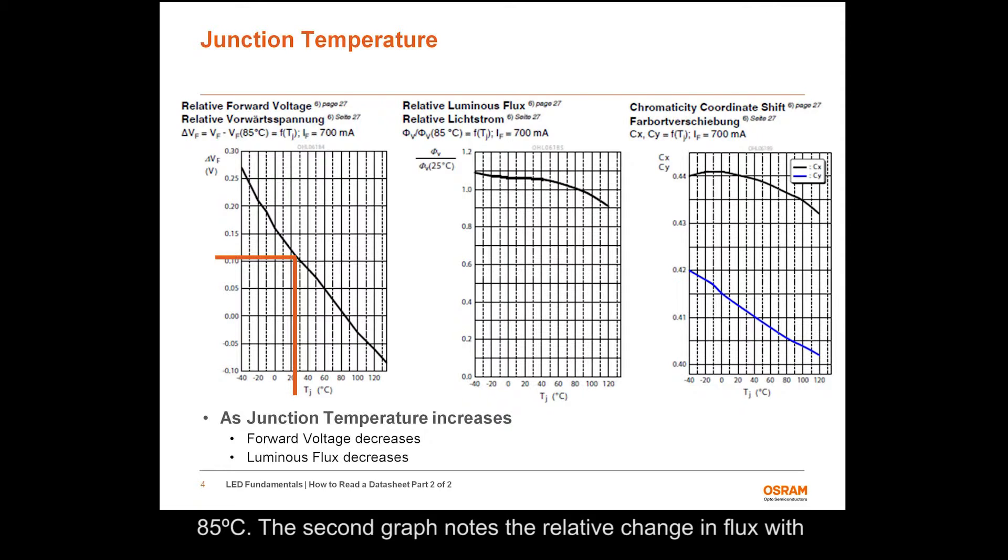At a constant current of 700 milliamps, the second graph notes the relative change in flux with respect to junction temperature at a constant current of 700 milliamps. For example, the luminous flux at 25 degrees C junction temperature would be 1.05 times the value at 85 degrees C at a constant current of 700 milliamps. The third graph tracks the chromaticity coordinates with respect to junction temperature at a constant current of 700 milliamps.